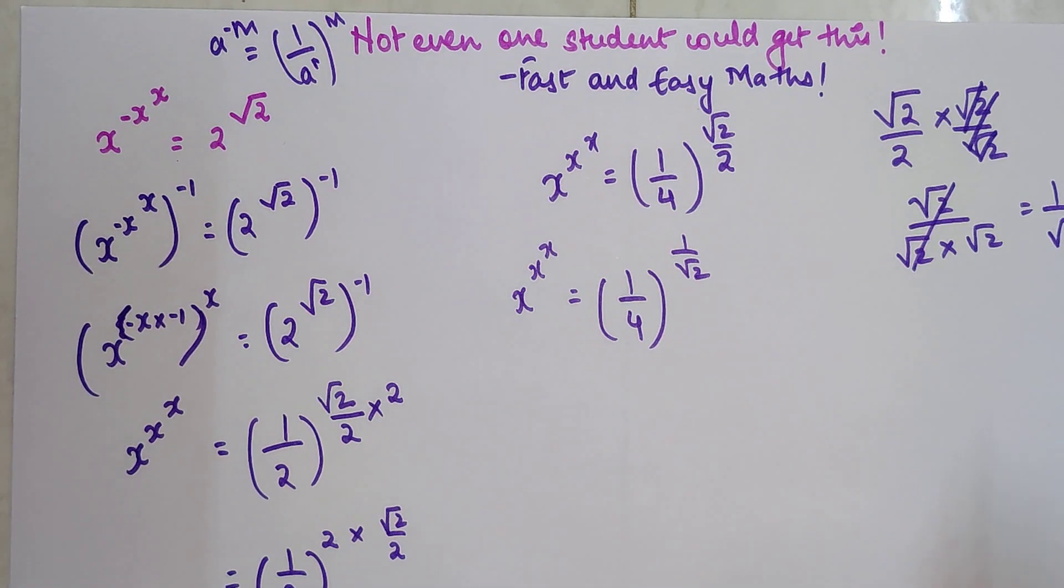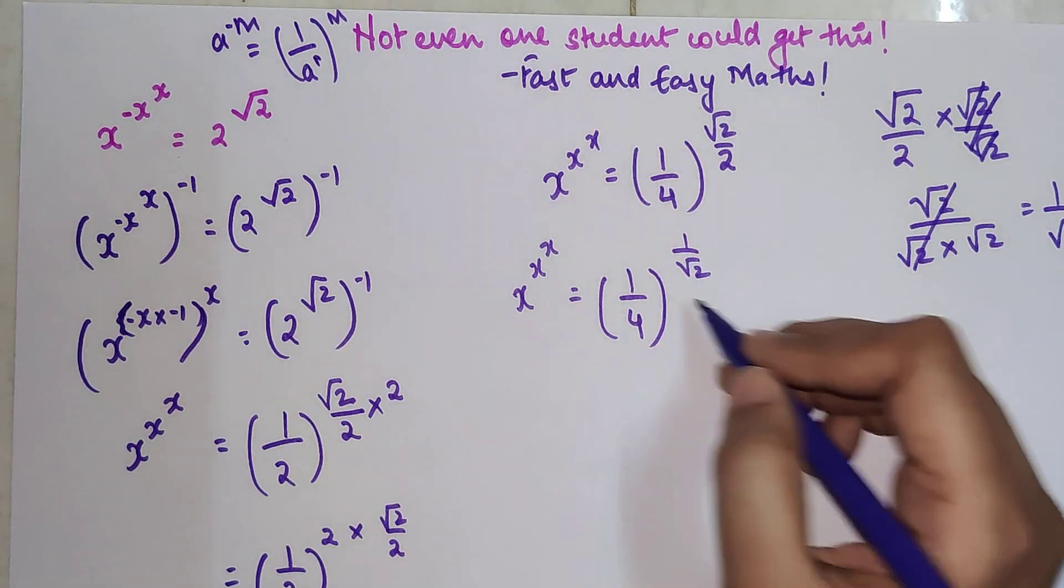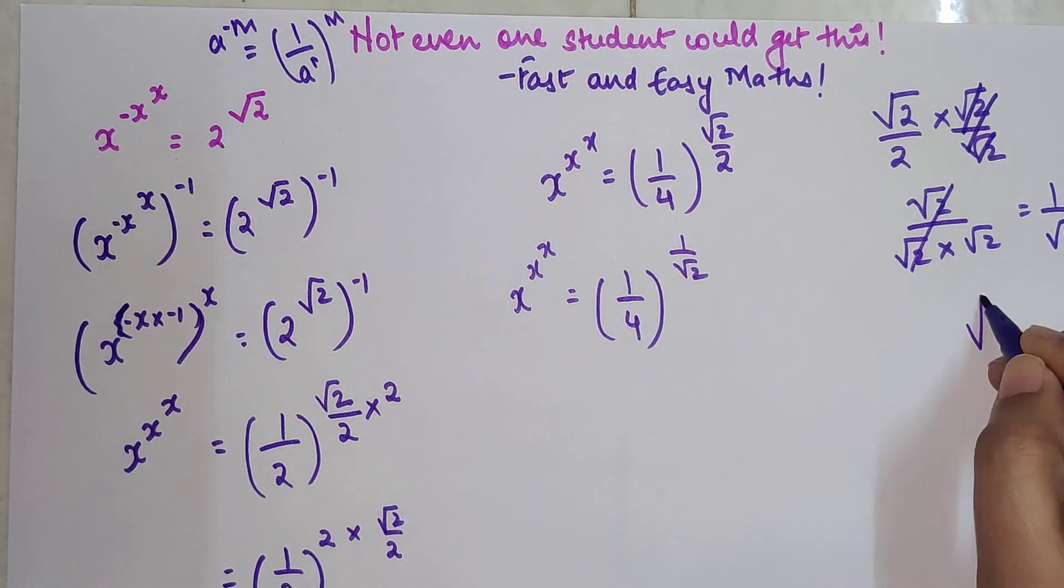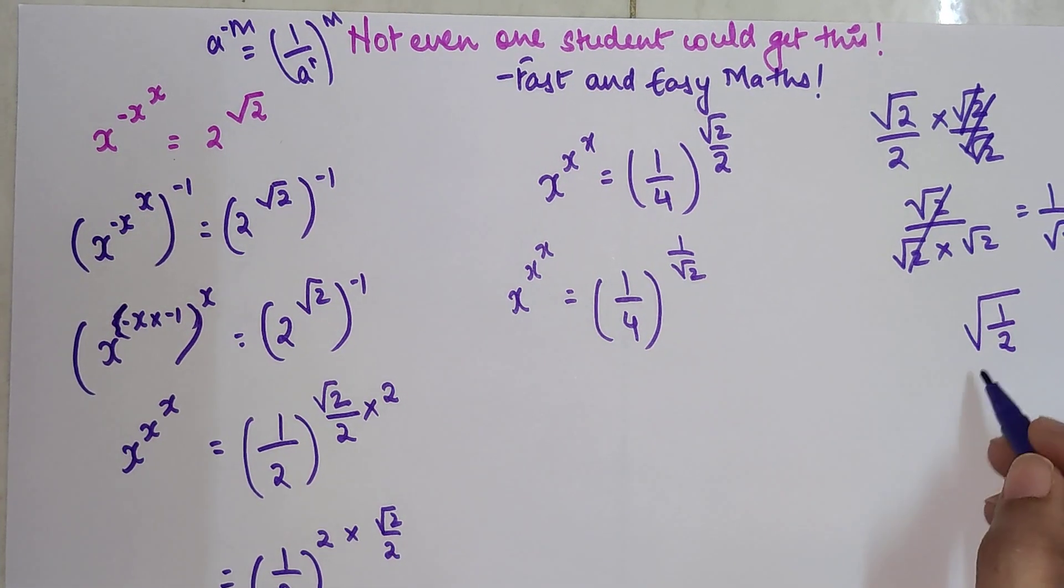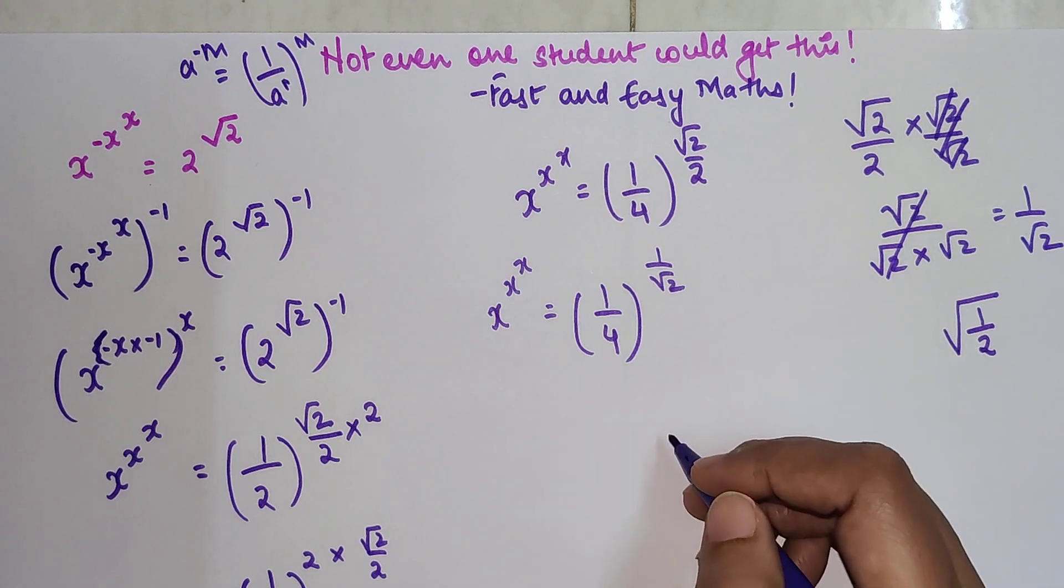Now this root 2 can also be written as 1 upon 2 the whole root because square root of 1 is also just 1.